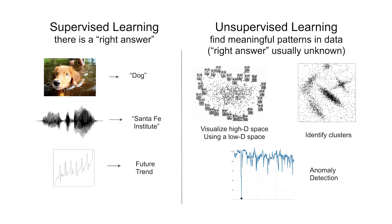Examples of supervised learning include: given an image, classify it as either a cat or dog — there's clearly a right answer for most images. Or, given an audio recording, parse the text that was actually said. Or, given stock market historical data, predict what the stock market will be. The stock market will reach a certain level, so we can be right or wrong. In this tutorial, we'll mainly talk about supervised learning.